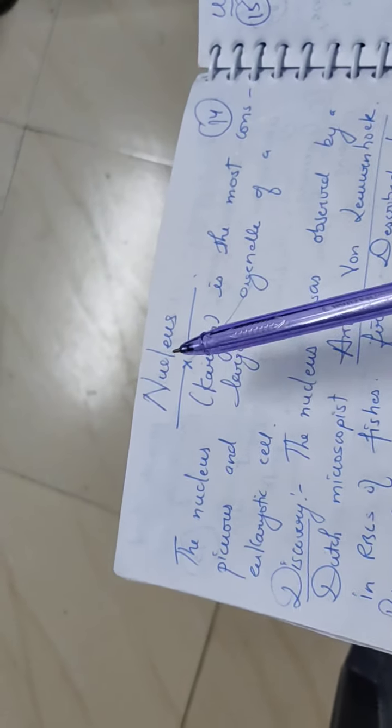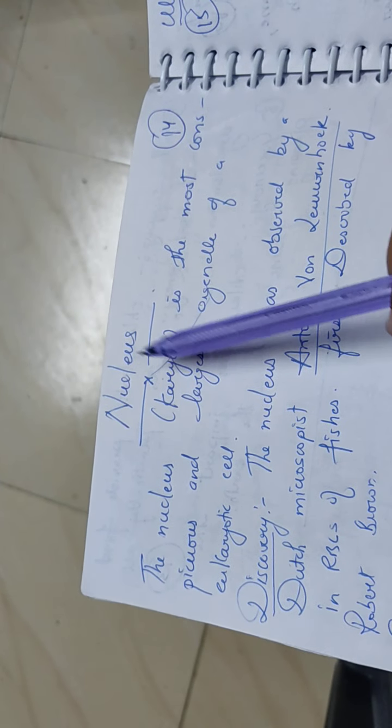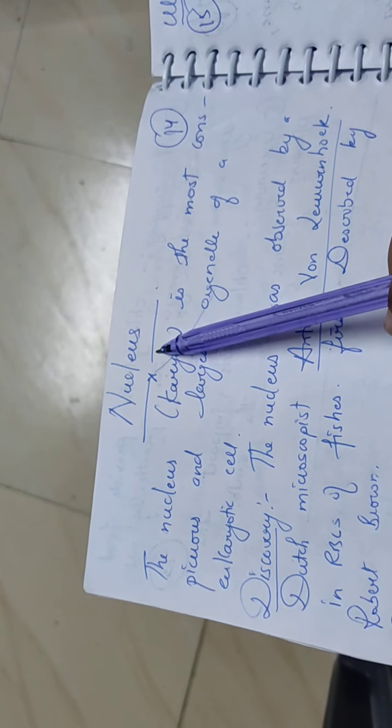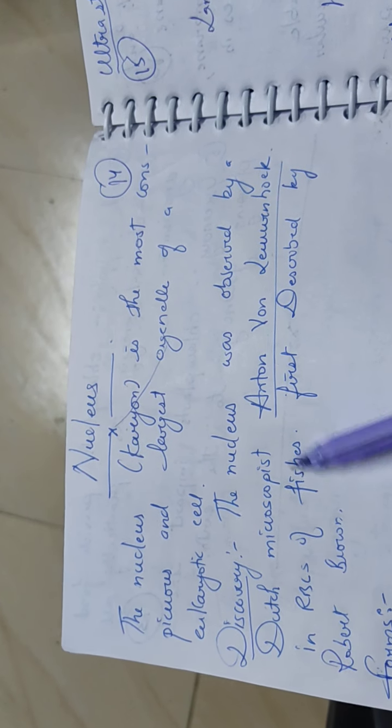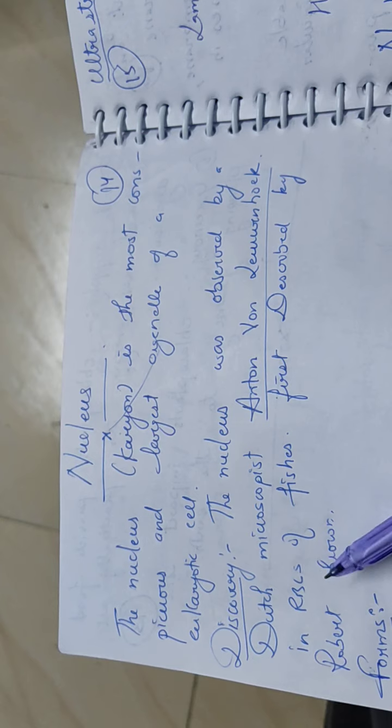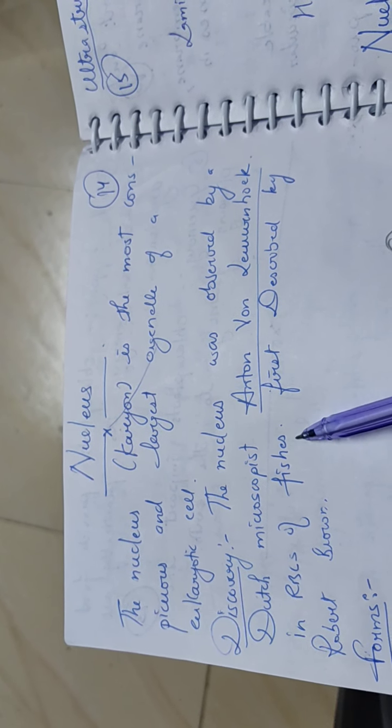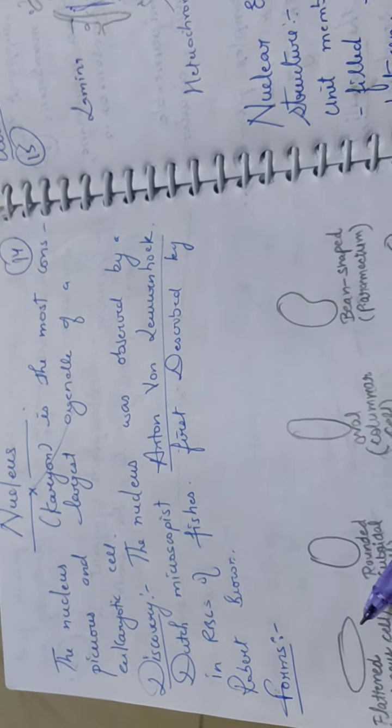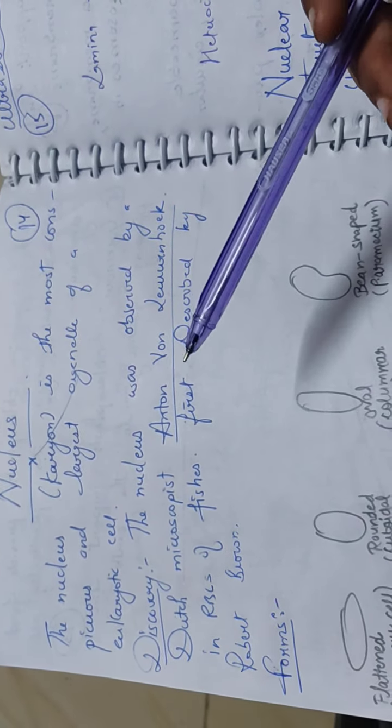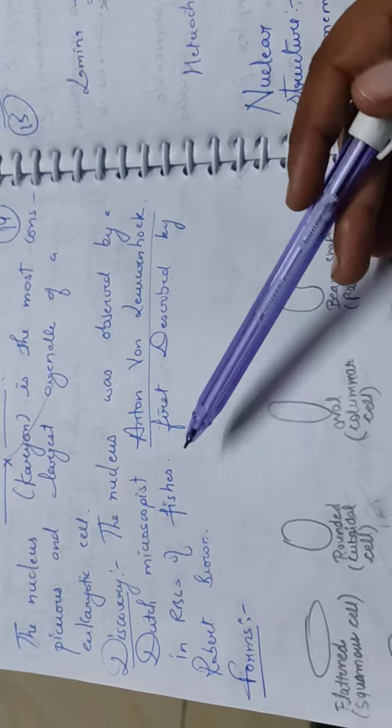Okay, so this is the next topic on nucleus organelle, which is the largest organelle of the eukaryotic cell. Discovery: Dutch microscopist Anton van Leeuwenhoek discovered it in RBCs of fishes, and Robert Brown described it.